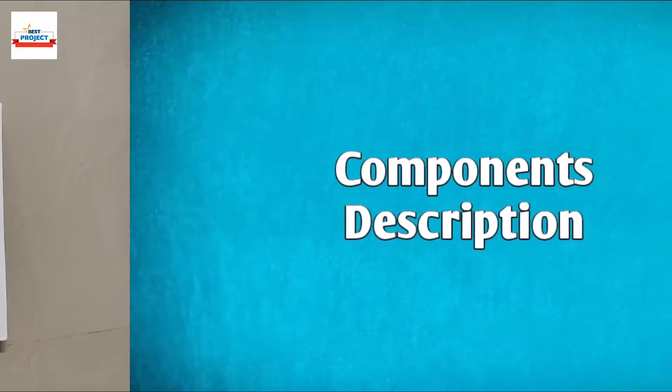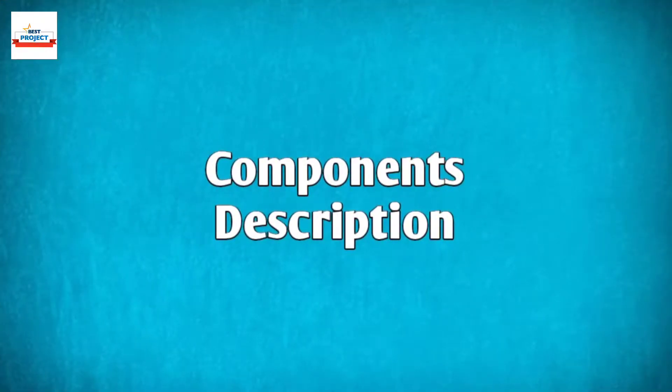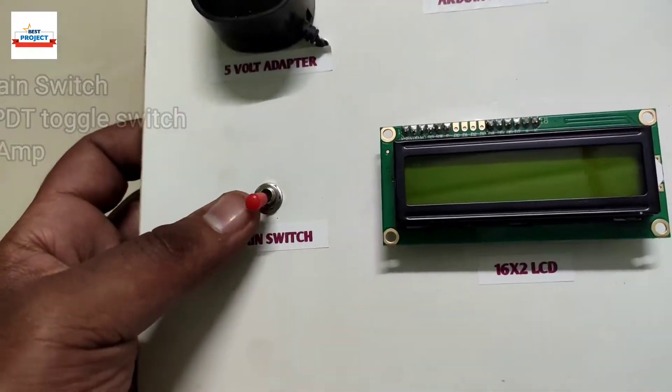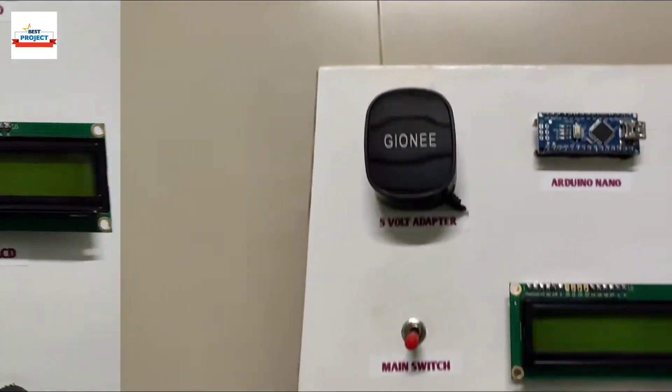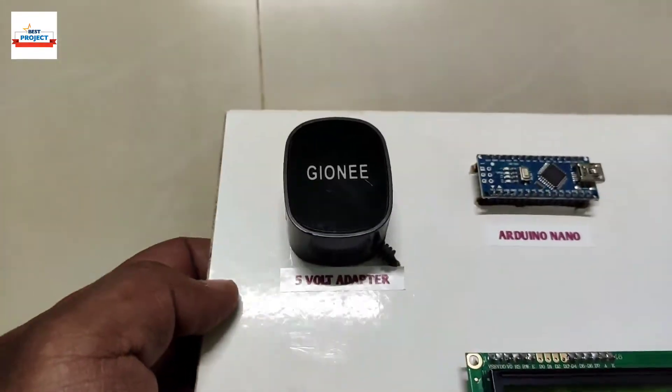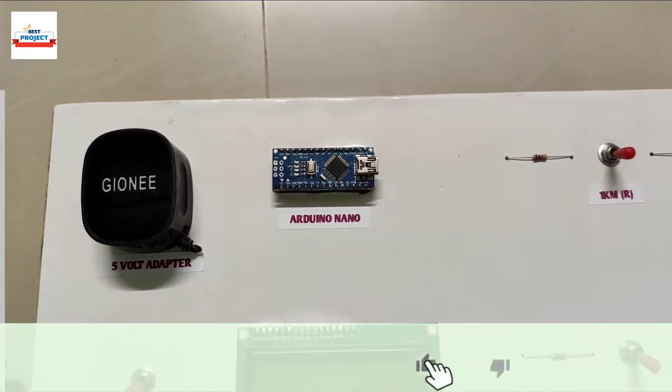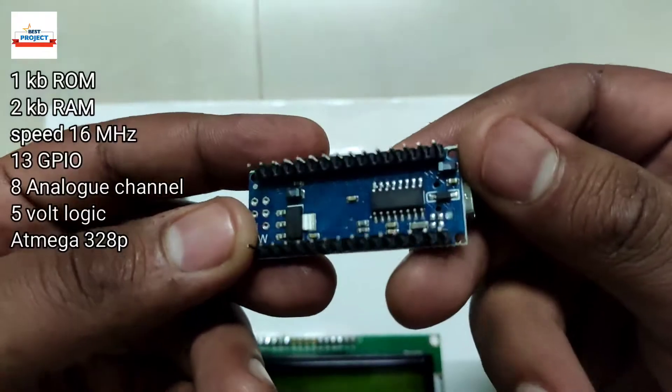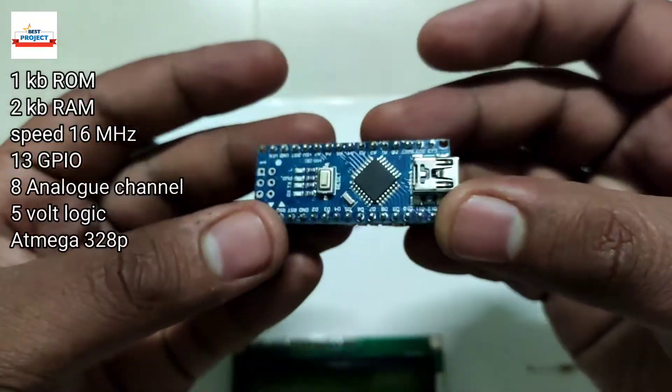Let's talk about the components used. It is the main switch, used to turn on and off the entire system. This is a voltage regulator circuit to provide constant 5 volt DC supply to Arduino. The Arduino Nano is the brain of the system. It is removable for study purpose.